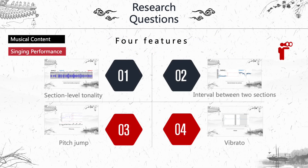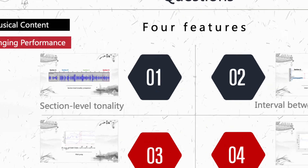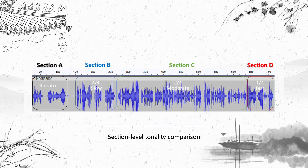There are four features we are interested in. The first two are about musical content and the last two are about singing performance. The first feature is tonality. Tonality is very important when studying music, and we are interested in how tonality varies with section.